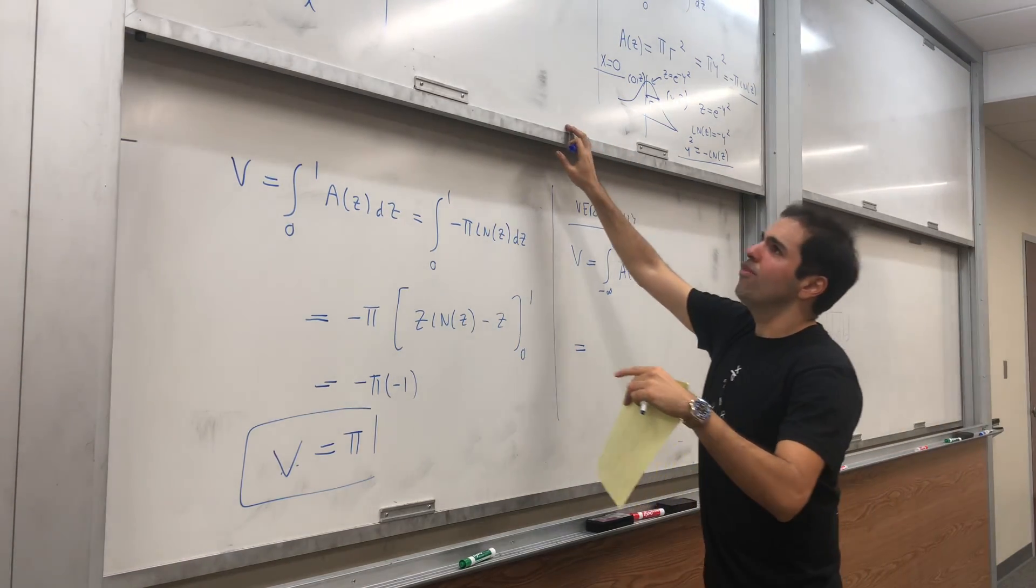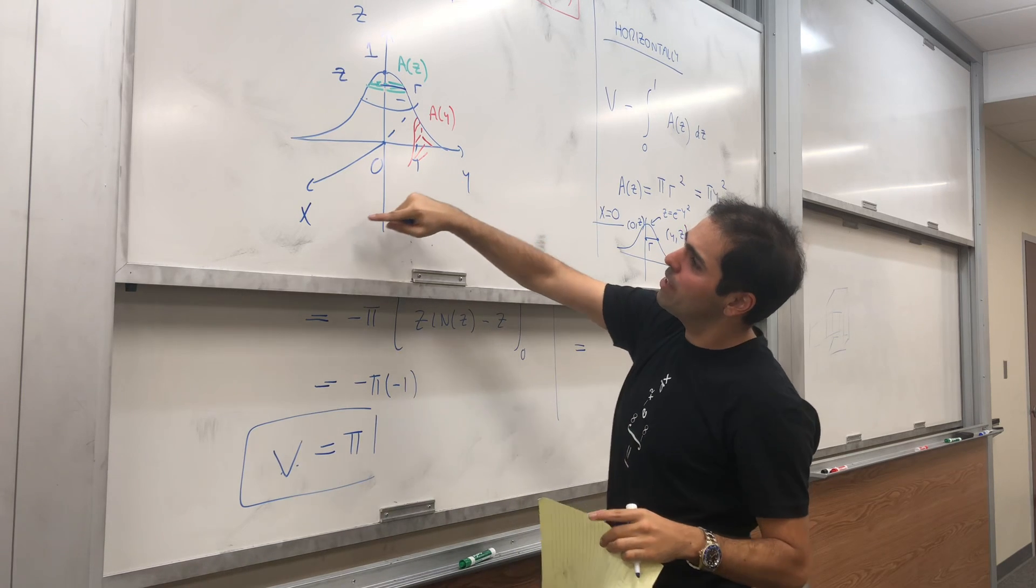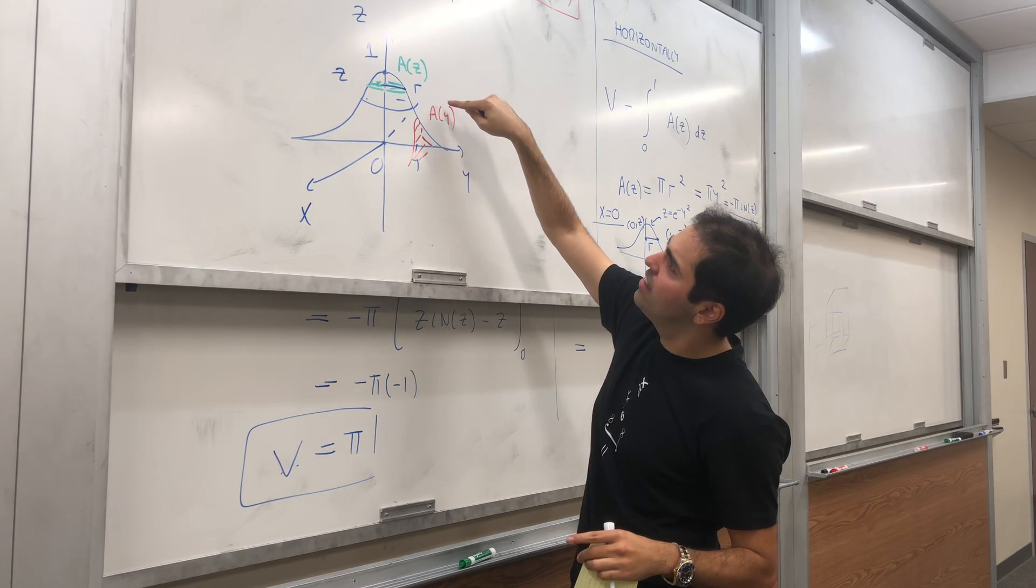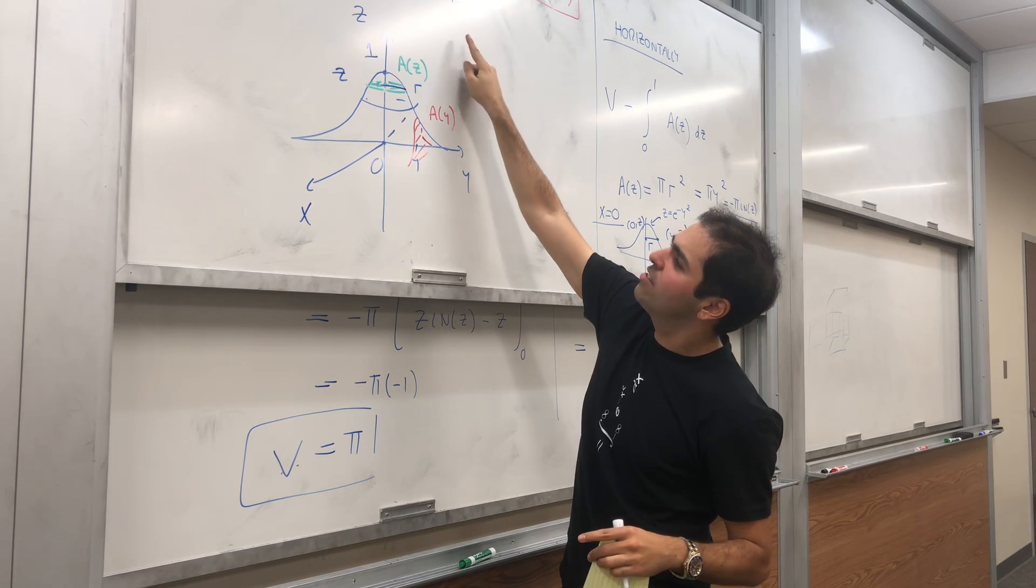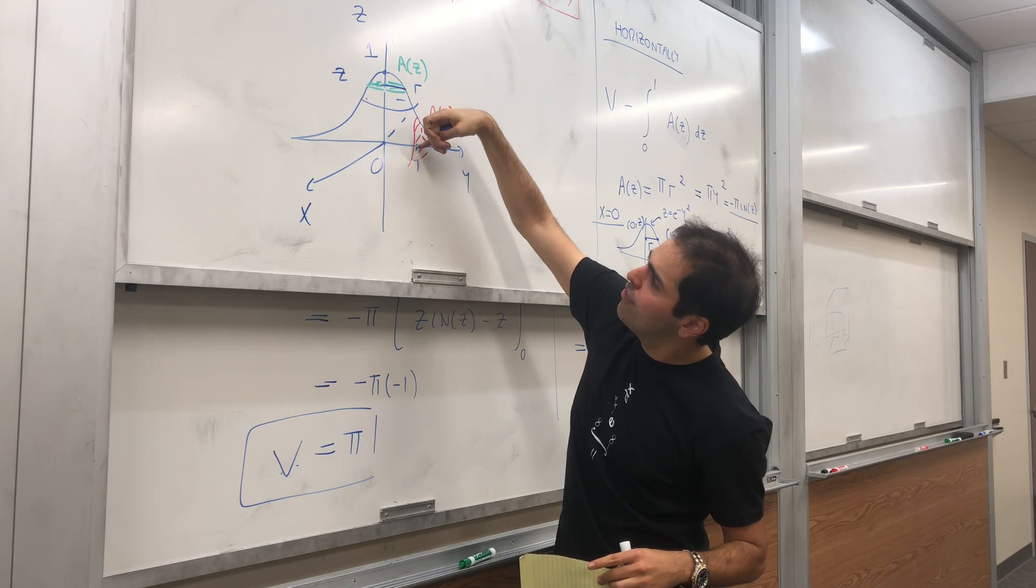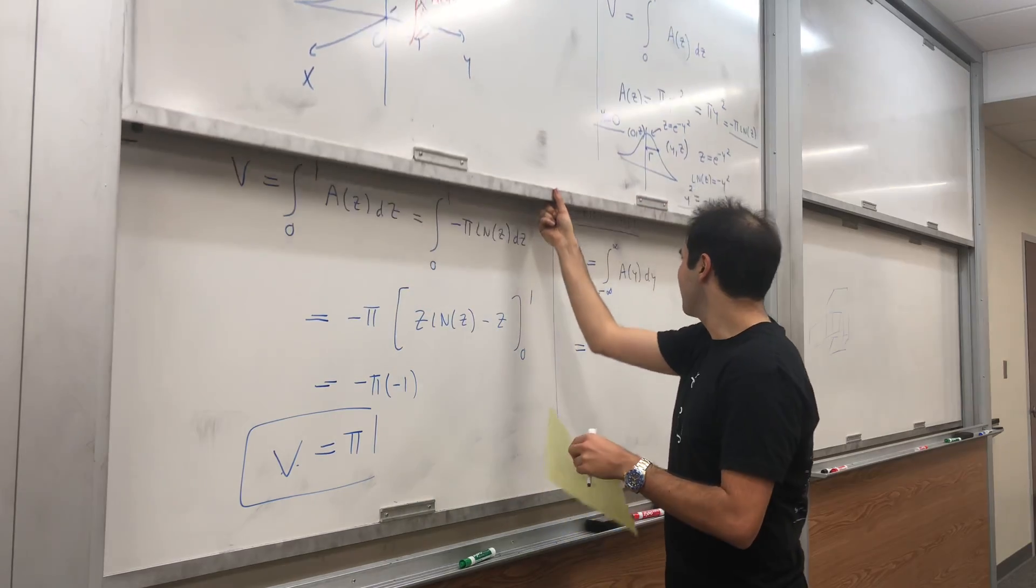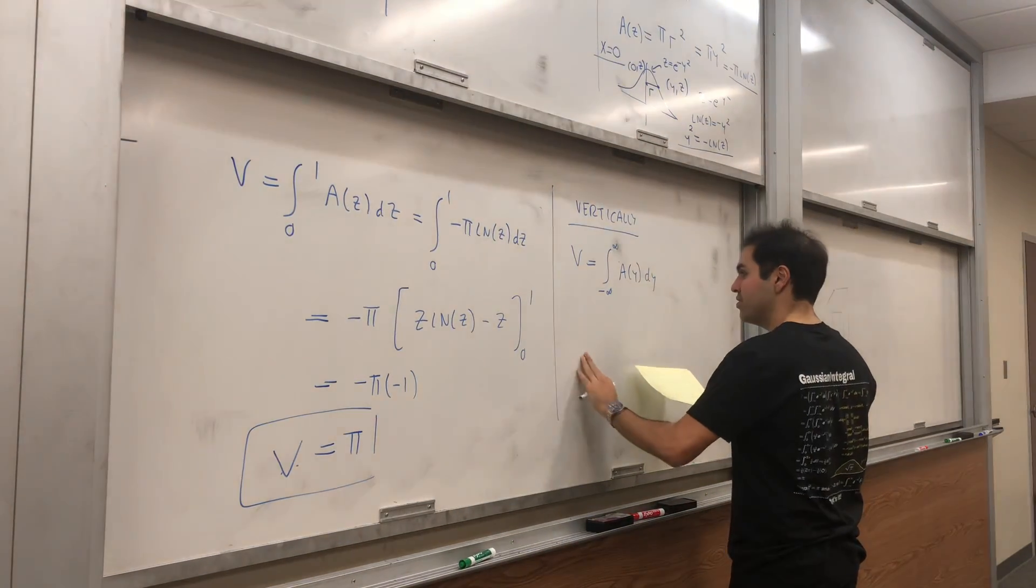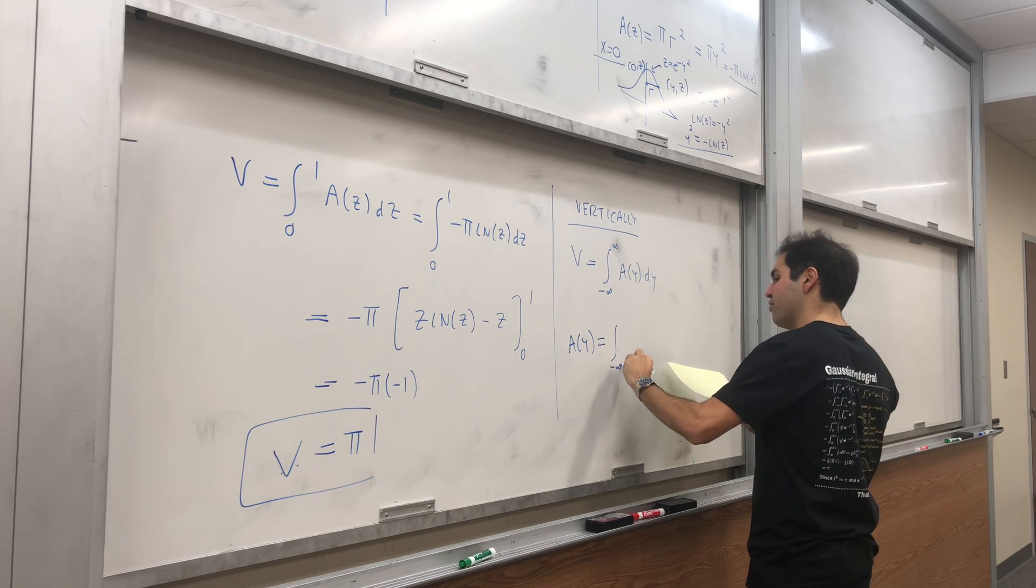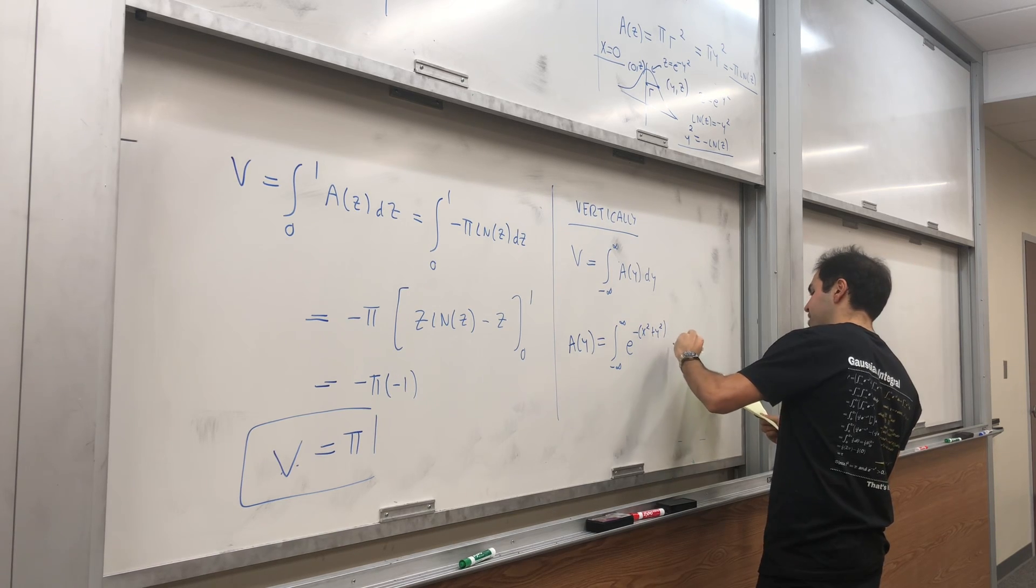What is A(y)? At every slice, if you fix y, you're just integrating our function with respect to x. So A(y) is the integral from -∞ to ∞ of e^(-(x²+y²)) dx, which makes sense because this is a function of y.